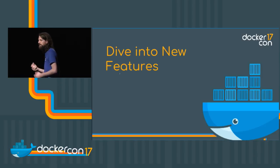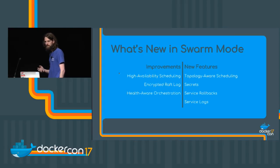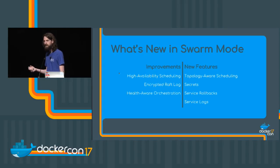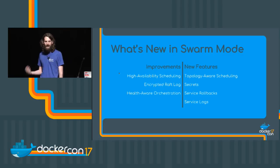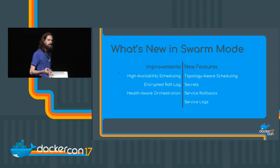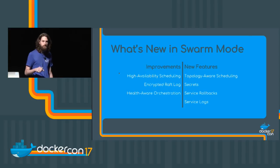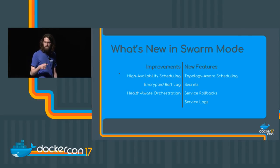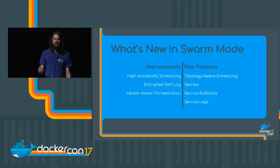Now we're going to get into some new features: improvements we've made to Swarm. High availability scheduling, the encrypted Raft log, health-aware orchestration, and features enabled by these improvements like topology-aware scheduling, secrets, service rollbacks, and service logs.